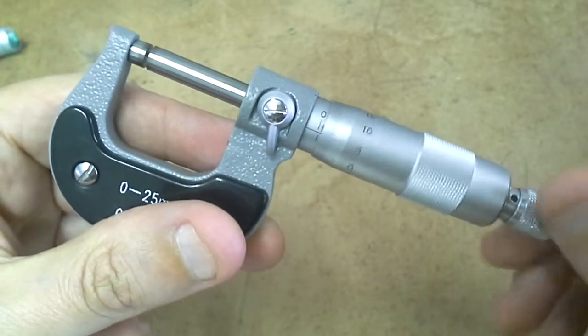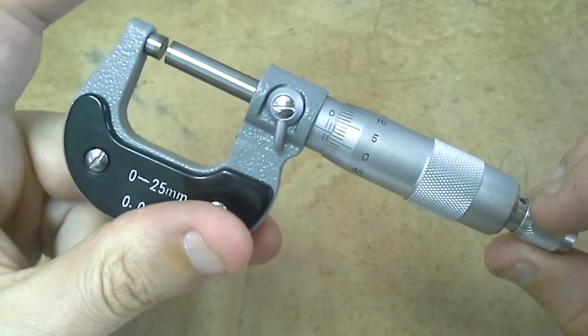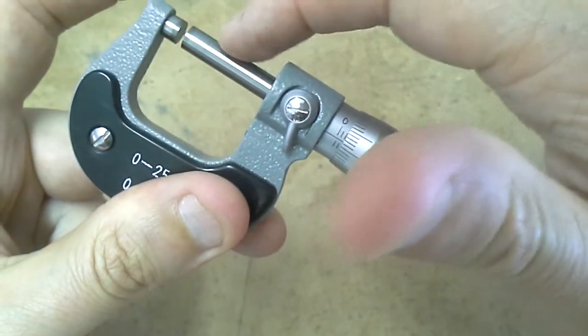Now firstly let's just go through the different parts. Well here we've got the anvil, this little section here is called the spindle,